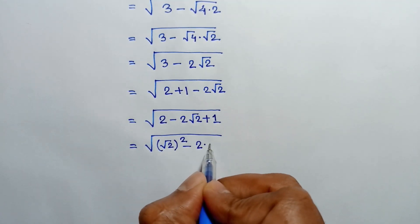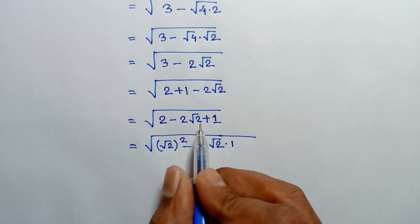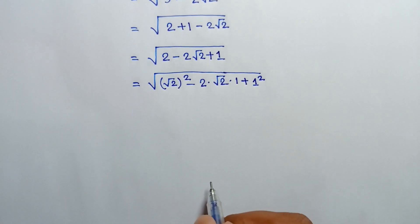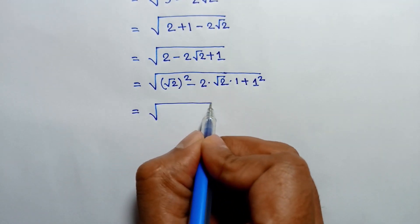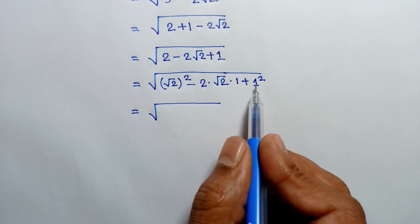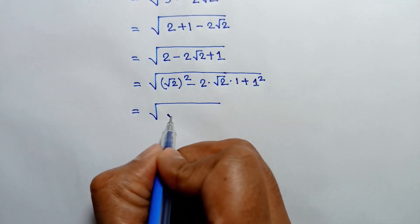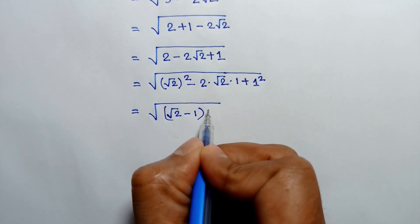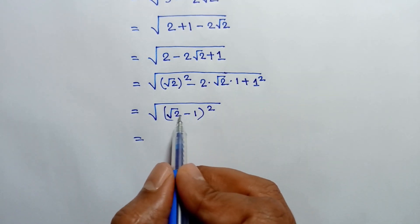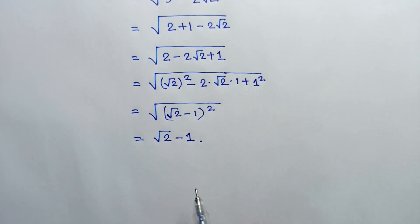This matches the formula a squared minus 2ab plus b squared equals a minus b whole square, where a equals square root of 2 and b equals 1. Applying this formula, we get square root of (square root of 2 minus 1) whole square. The square root and the square cancel out, leaving square root of 2 minus 1 as the simplified form.